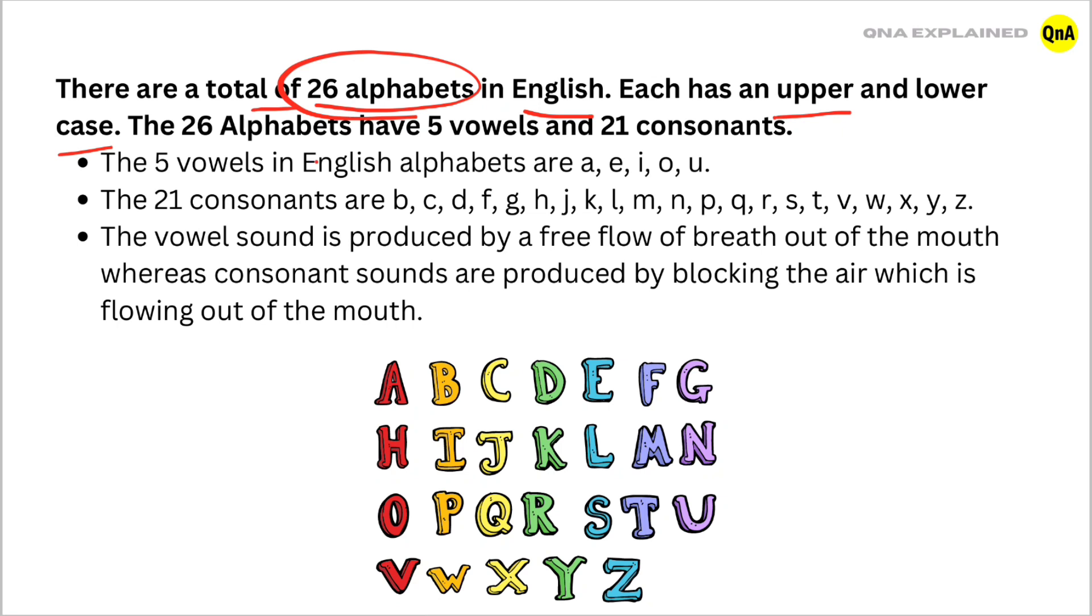The 26 alphabets have 5 vowels and 21 consonants. The 5 vowels in English alphabets are A, E, I, O, U. The 21 consonants are B, C, D, F, G, H, J, K, L, M, N, P, Q, R, S, T, V, W, X, Y, Z.